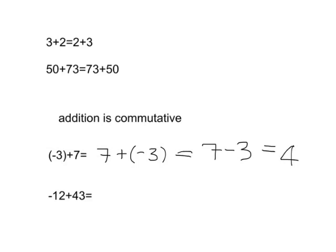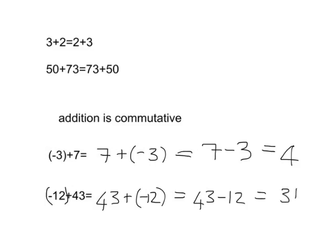You try one now. If I ask you to do negative 12 plus 43, you can use commutativity to make it easier — pause the video and try it. The first step is to write 43 plus negative 12. You know that adding a negative is the same as subtracting, so 43 minus 12 is very easy to do. That answer is 31.